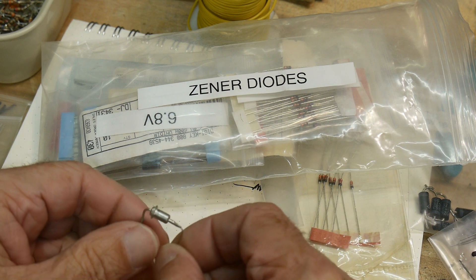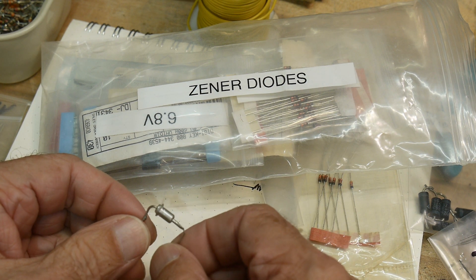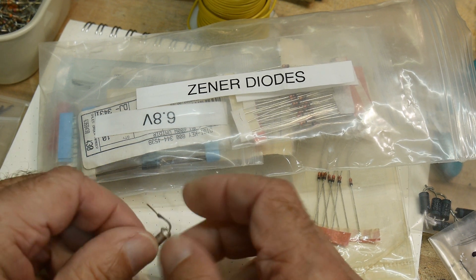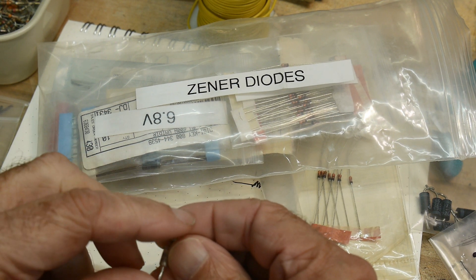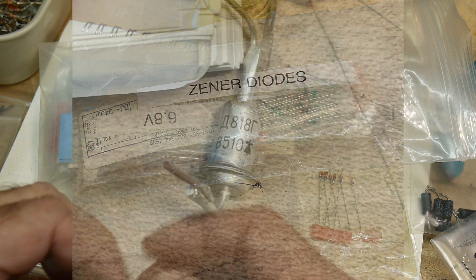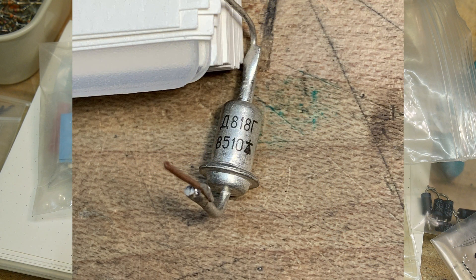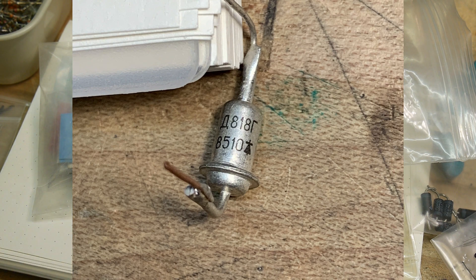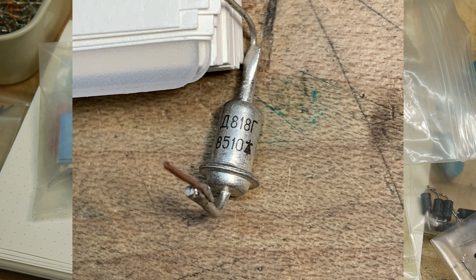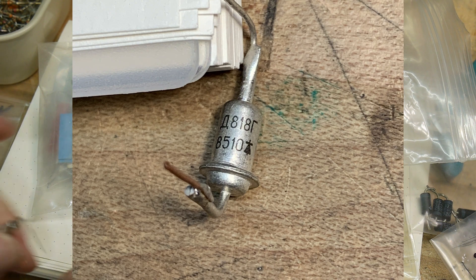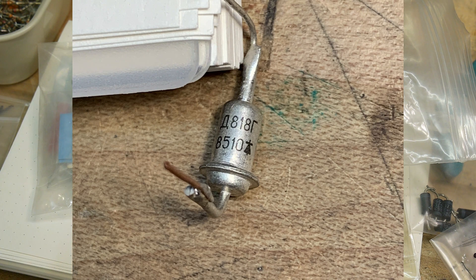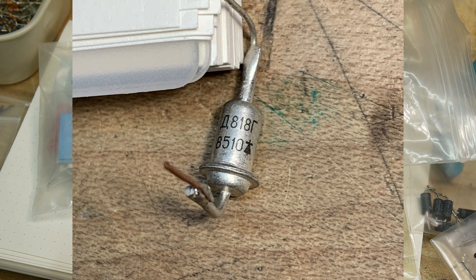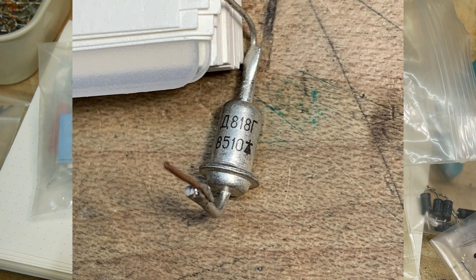It was made in the good old days, and it has some markings on it. I'll show you the pictures here. I can't read Cyrillic, but the numbers are 818, and then there's 8510. So maybe this is 1985, and it's a really cool-looking diode. But let's go put it on the curve tracer.